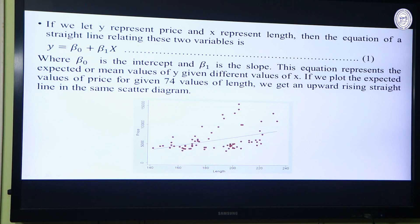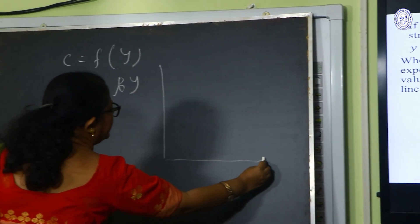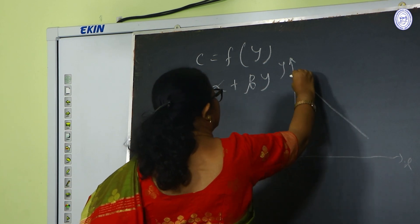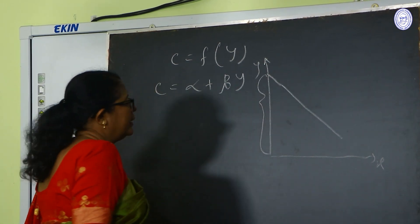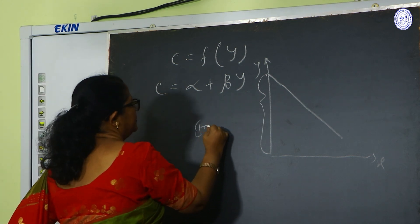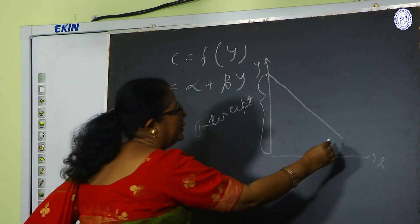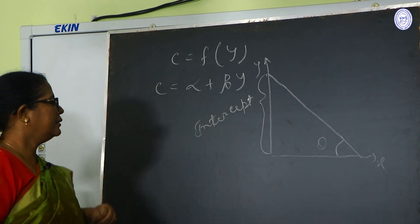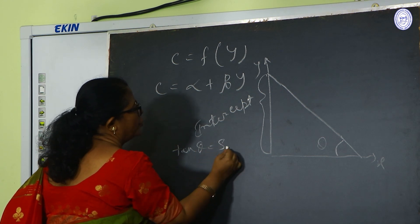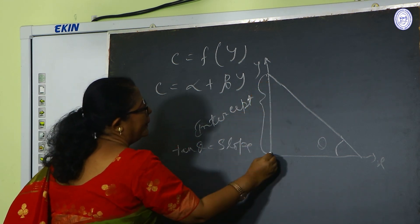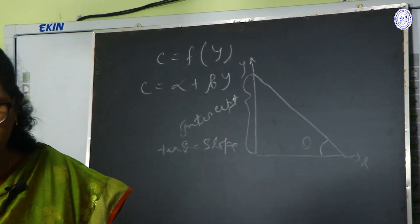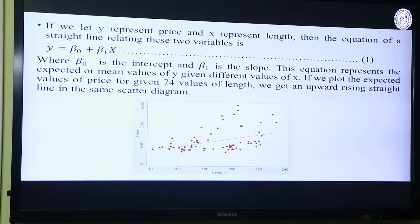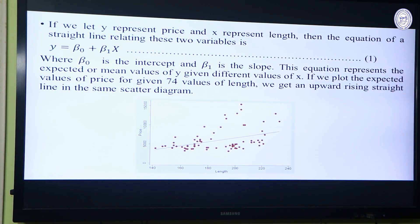As you all know, if I draw one line — here it is the y-axis and here it is the x-axis — if the line is like this, then the distance covered in the vertical axis is called the intercept. If the line stands at an angle theta with the horizontal axis, then tan theta will be the slope, or it is the perpendicular by base — everybody knows that from trigonometry which we learned during class 10 mathematics. So here we constructed this equation where beta 0 is the intercept and beta 1 is the slope.